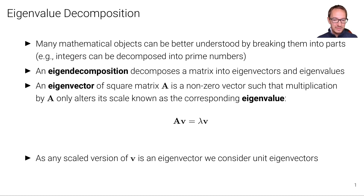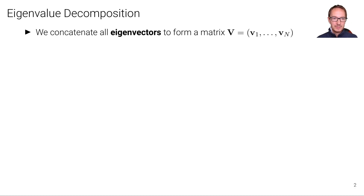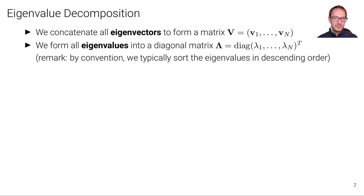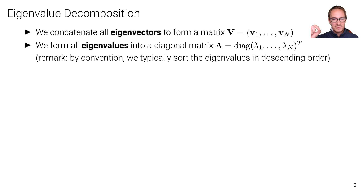Since any scaled version of vector V is also an eigenvector, to make the eigendecomposition unique we typically only consider unit eigenvectors — normalized so they have Euclidean norm 1. We then concatenate all eigenvectors to form a matrix V, where each eigenvector is a column. Similarly, we form all eigenvalues into a diagonal matrix Lambda, where lambda 1 corresponds to V1, lambda 2 corresponds to V2, and so on, with the rest being zero.